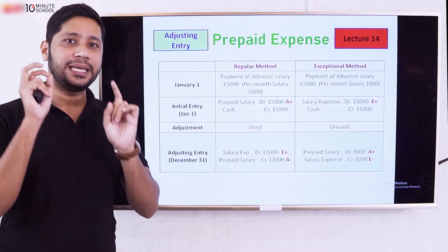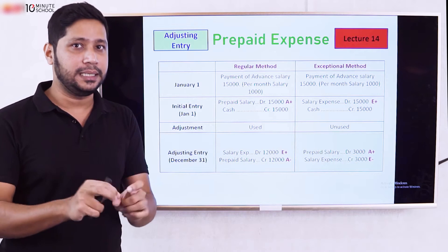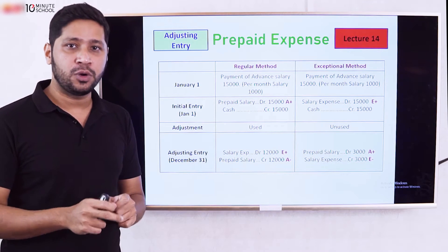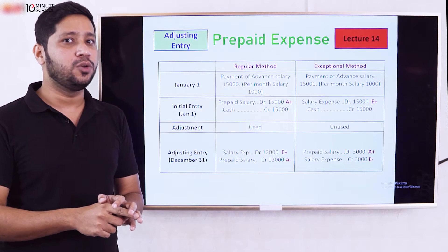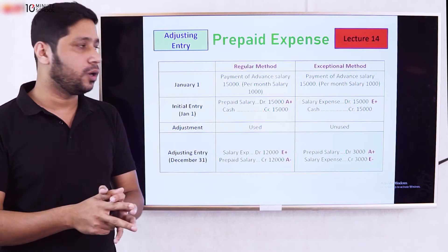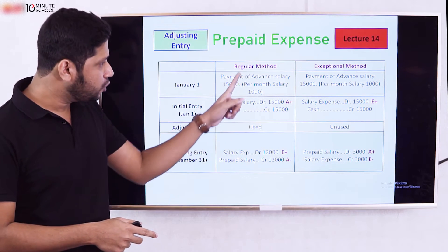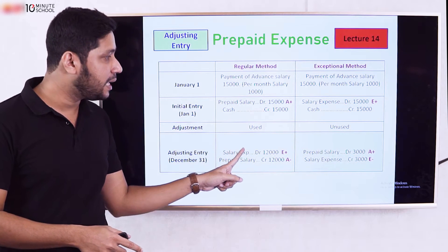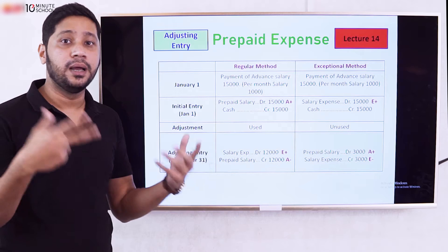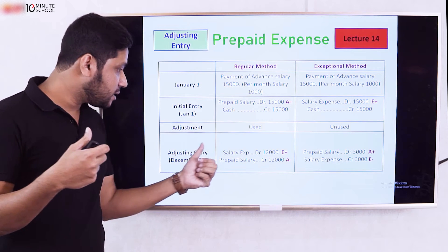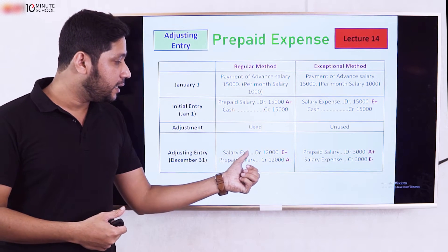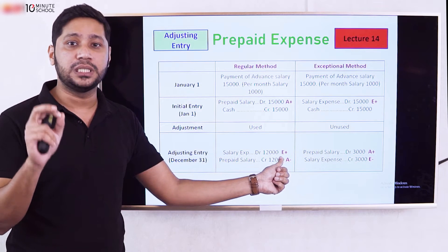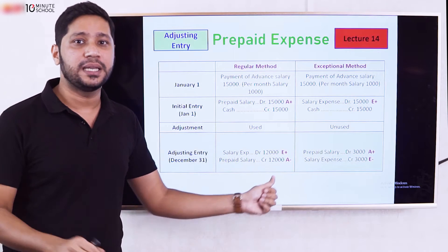The salary expense is determined by usage. When the salary expense already has a certain amount recorded, if the total should be $12,000 and $12,000 is already there, the remaining $3,000 stays as prepaid. The used portion is the expense.